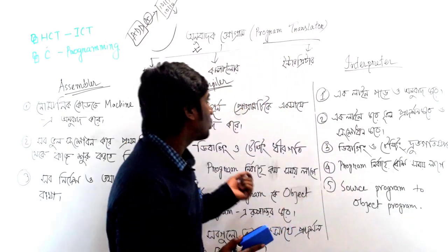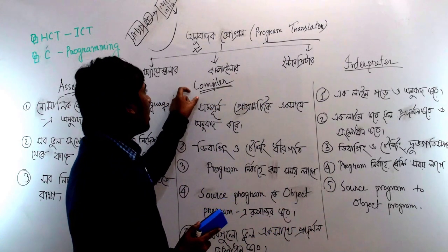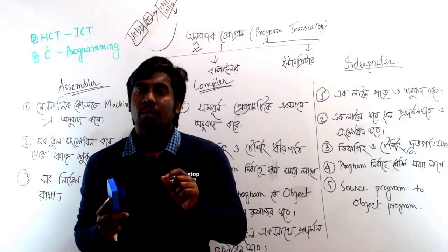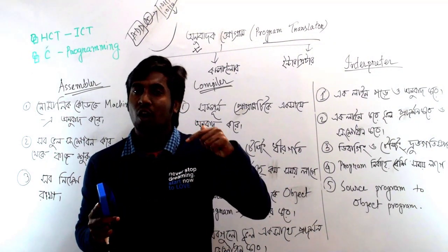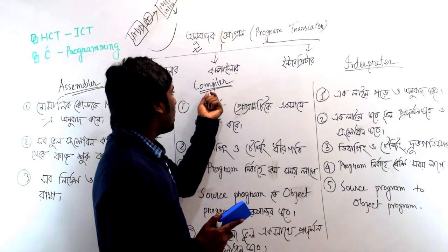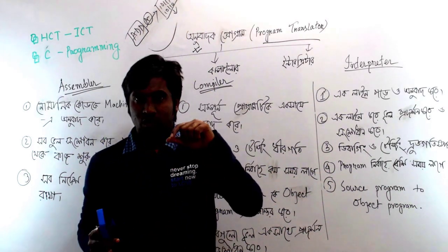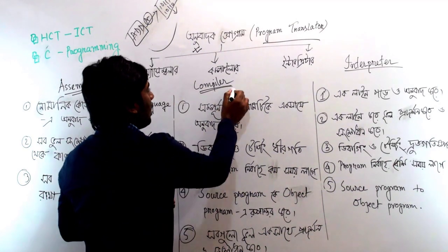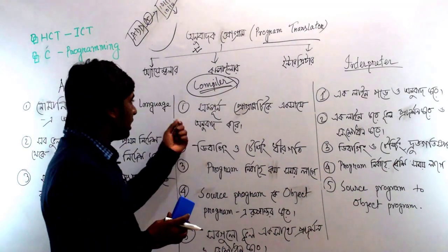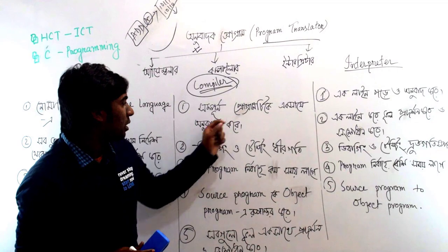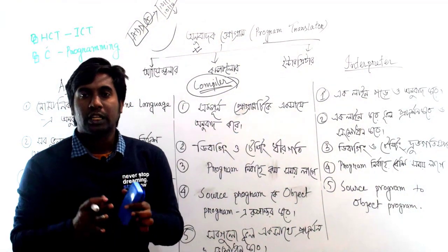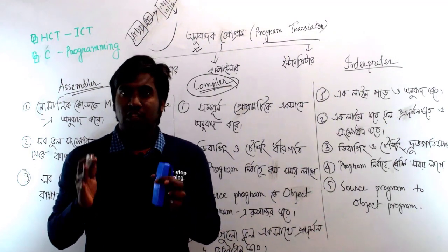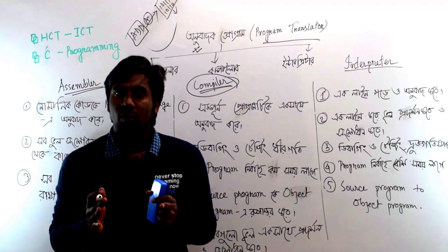Next, we look at the compiler. The compiler is a program translator. It takes the source program and converts it to an object program — the compiler scans the entire program from first to last, checking and correcting the entire source program.